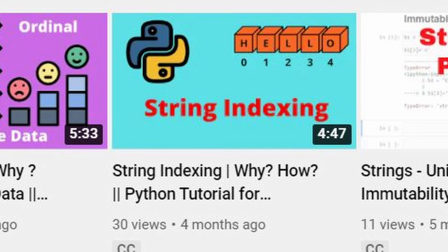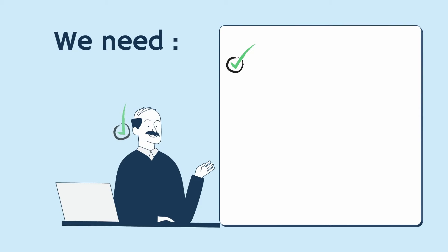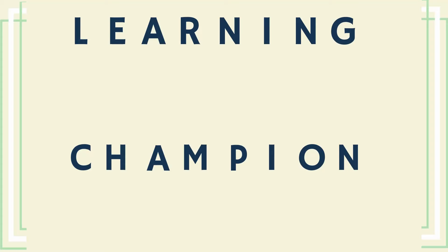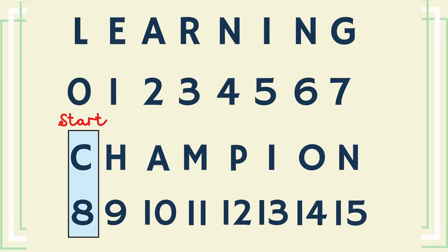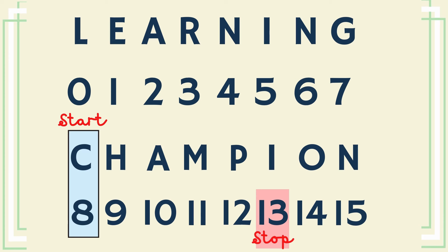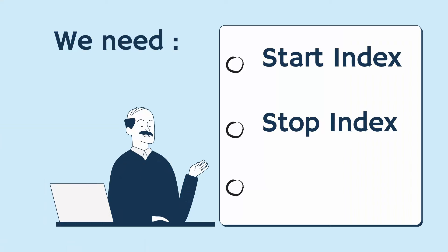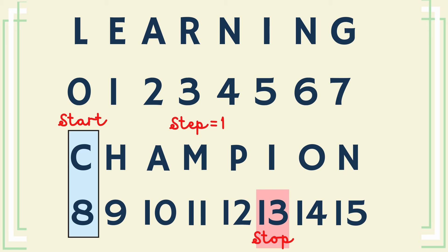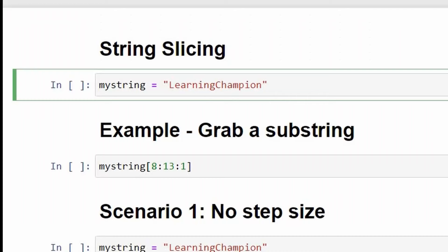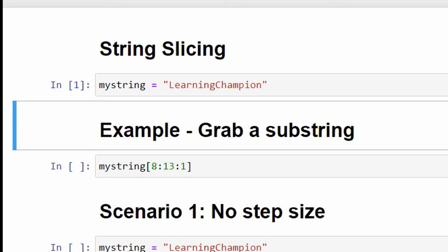Let's take some examples to fully understand string slicing. For our first example, we have a string 'learning champion' from which we want to grab the substring 'champ'. We need three indexes to grab this substring. The start index is 8, the stop index is 13 because we want to grab the substring up to the 13th index but not include the 13th element, and the step size is 1 because we want to pick all the letters from index 8 to 13. As you can see, after running this code the output is indeed 'champ'.